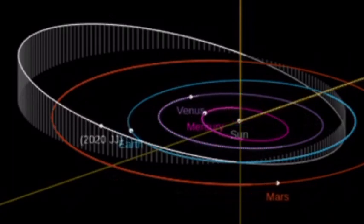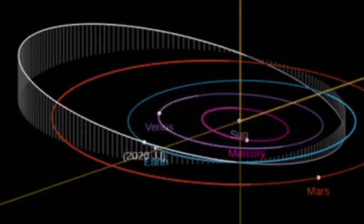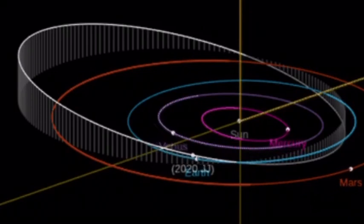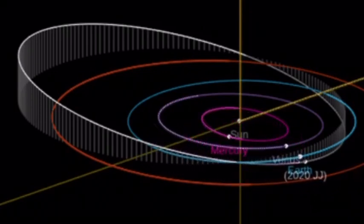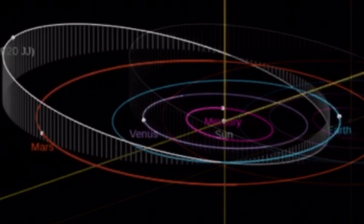Astronomers had no notice of asteroid 2020-JJ's existence, as it was discovered using the Mount Lemmon survey in Arizona right around the time it reached its closest point to us.